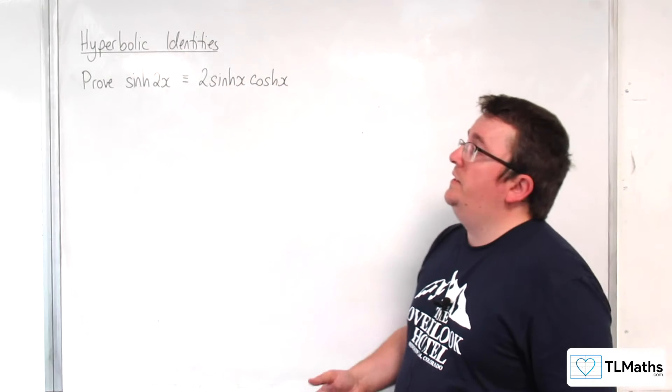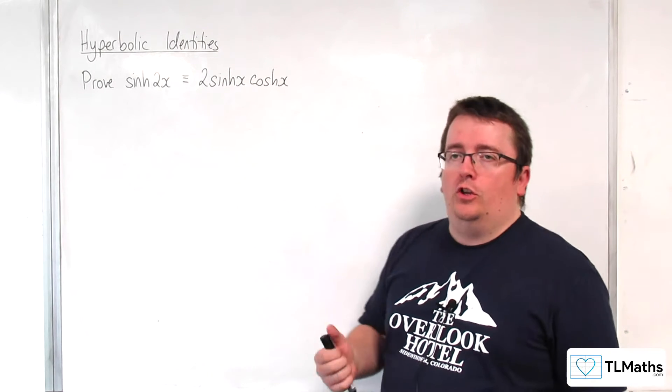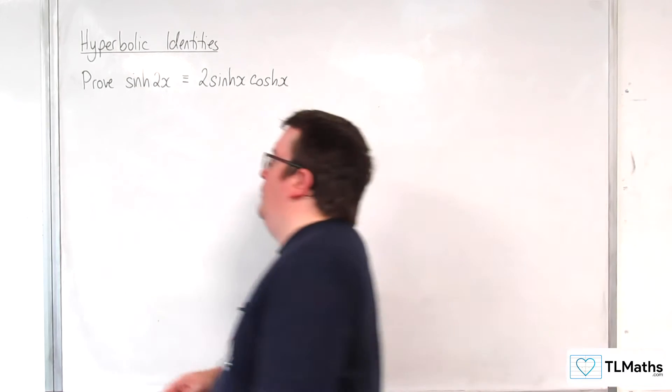In this video we're going to prove the identity that sinh of 2x is equivalent to 2 sinh x cosh x. Now we're going to start with the right hand side.